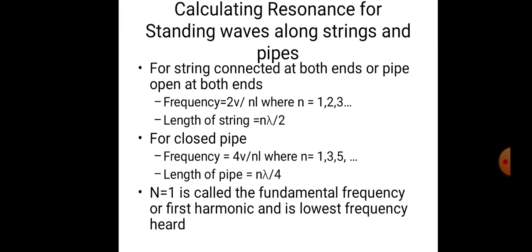For open at both ends, the frequency is f = 2v / nL where n = 1, 2, 3, and length of string = nλ/2. For the closed pipe, frequency is f = 4v / nL where n = 1, 3, 5, and length of pipe = nλ/4. n = 1 is called the fundamental frequency or first harmonic — the lowest frequency heard.